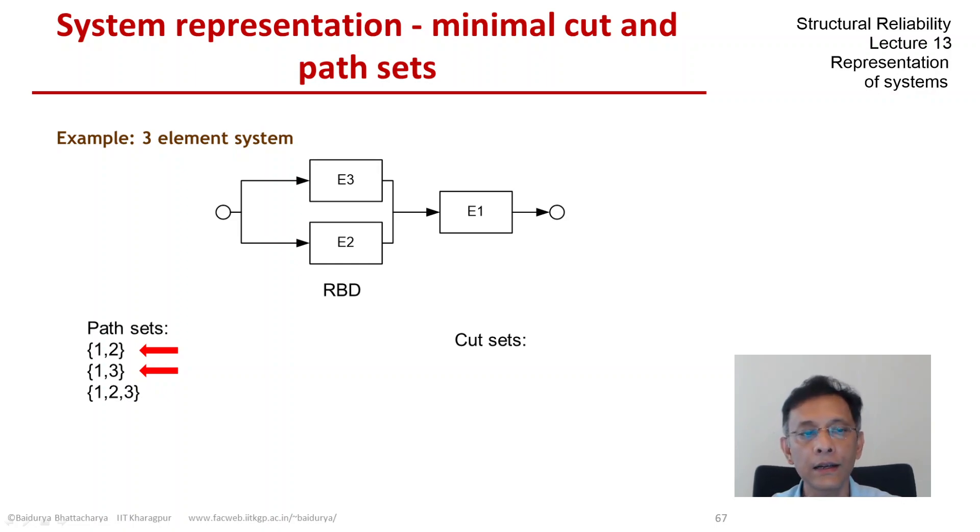We can also identify the cut sets and it is not necessary that the number of path sets and number of cut sets have to be the same. So the first cut set is 1. Obviously, if 1 fails, then the system fails.